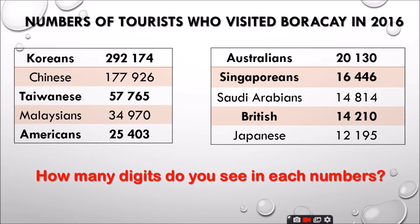So, how many digits do you see in each number? We have 5 digits and 6 digits. Can you read the numbers?